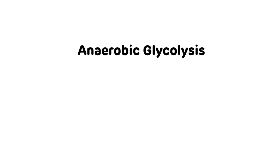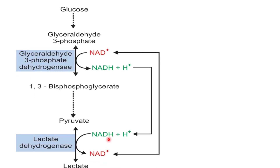Now we will see anaerobic glycolysis, that is glycolysis in the absence of oxygen. In the absence of oxygen, pyruvate is converted into lactate via lactate dehydrogenase enzyme. Here NADH+H+ is converted back into NAD+. This NADH comes from the NADH synthesized at step 6 during conversion of glyceraldehyde-3-phosphate into 1,3-BPG. So this is how anaerobic glycolysis occurs.